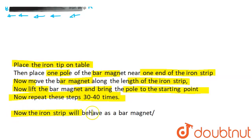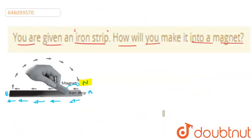After that, the iron strip will become a bar magnet with two poles. So, this will be what we need to do.